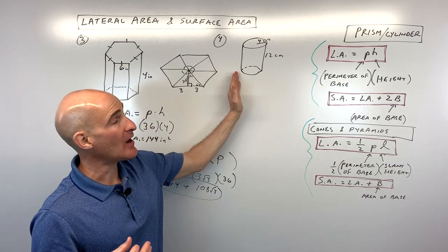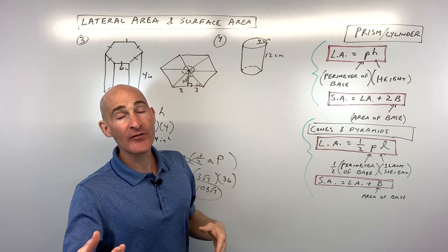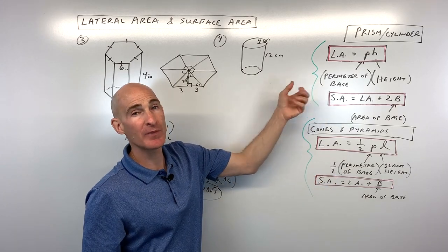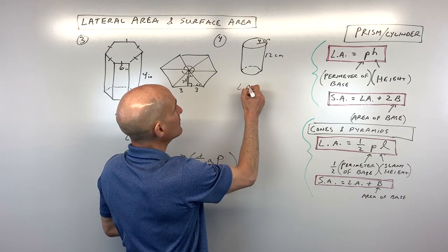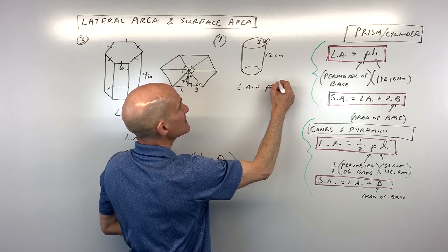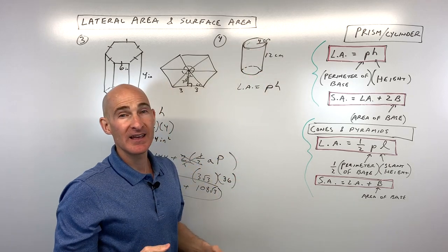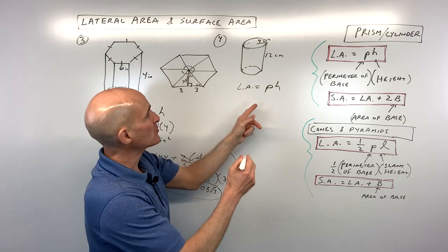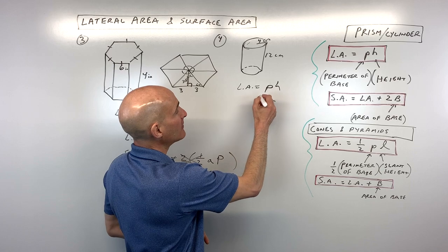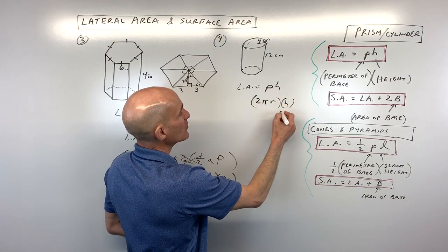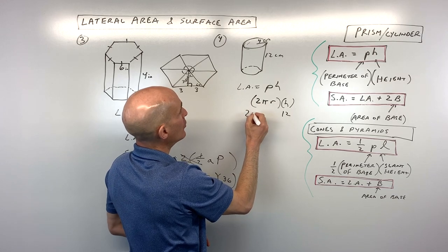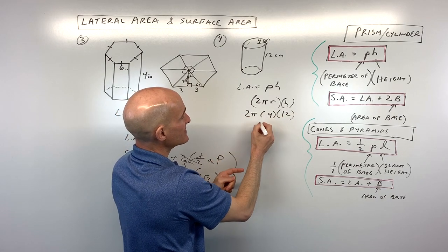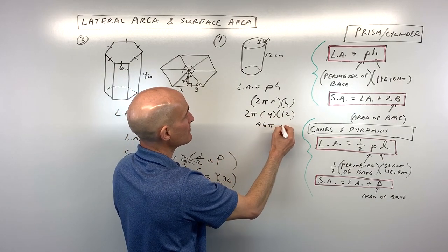Now let's find the lateral area and surface area of a cylinder. The lateral area equals the perimeter of the base times the height — but the perimeter of a circle is the circumference, which is 2πr. With a radius of four and height of 12, we get two times four is eight, times 12 is 96, giving us a lateral area of 96π centimeters squared.